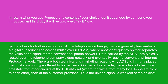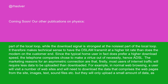There are both technical and marketing reasons why ADSL is in many places the most common type offered to home users. On the technical side, there is likely to be more crosstalk from other circuits at the DSLAM end, where the wires from many local loops are close to each other, than at the customer premises. Thus, the upload signal is weakest at the noisiest part of the local loop, while the download signal is strongest at the noisiest part. It therefore makes technical sense to have the DSLAM transmit at a higher bit rate than the modem on the customer end. Since the typical home user does prefer a higher download speed, the telephone companies chose to make a virtue out of necessity — hence ADSL.